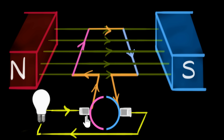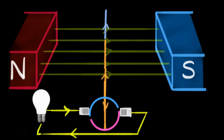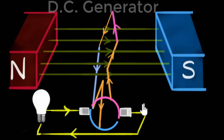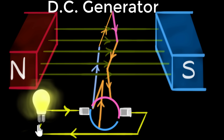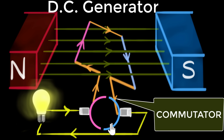With split rings, when the coil rotates to the position where the current reverses, the brush automatically switches contact from the pink side to the blue side, ensuring the current still flows in the same direction through the bulb. Again, as the coil completes another half rotation, the contact switches back to the pink side. This way we have built our DC generator, where current only flows in one direction through the external circuit. This arrangement is called a commutator — split rings act as commutators.